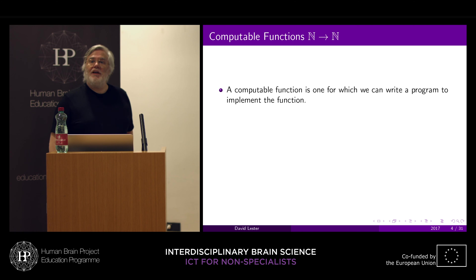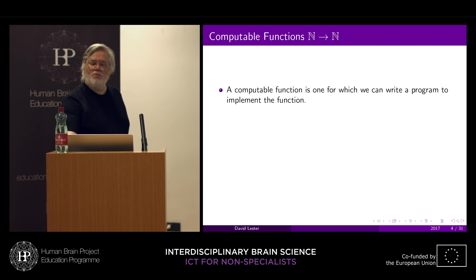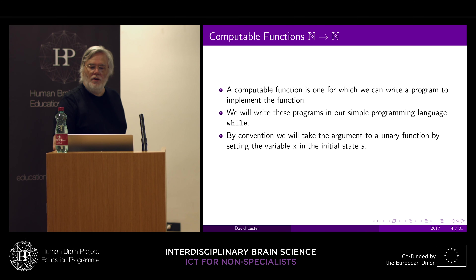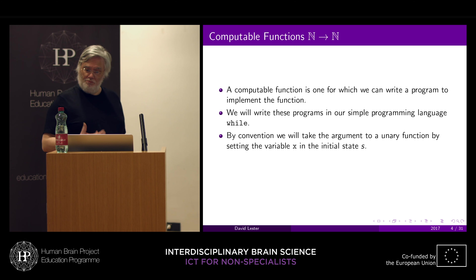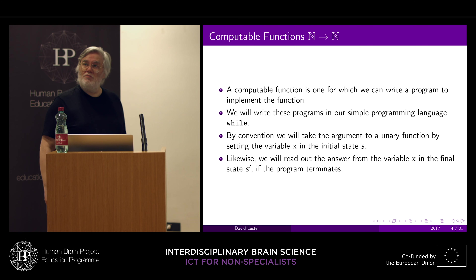Let's start at the beginning. A computable function is one that we can write a program to implement — that's the simple definition. For the purposes of this lecture, we're going to think about writing programs in our simple programming language, while. By convention, we're going to take the argument to a unary function — a function that takes just a single argument — by setting the variable x in the initial state, and also by convention it's the variable that's set in the final state when the program terminates.